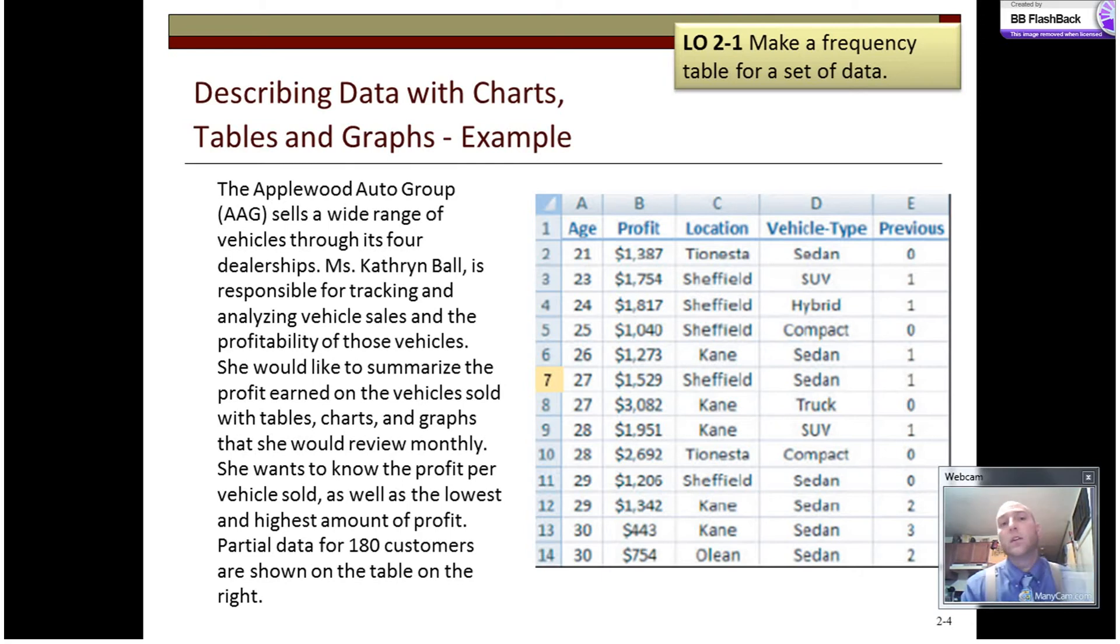The data that we're going to be seeing in this presentation is ancillary to this textbook. It comes from this description about the Applewood Auto Group. Basically, there's 180 records here, each of which indicates a car that was sold over the course of a month. The five variables that get included here are the age of the buyer, the profit the car was sold for, one of four locations where the car was sold, sometimes called dealerships.